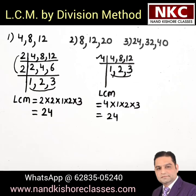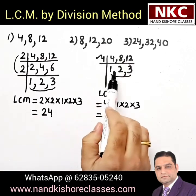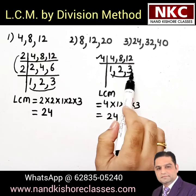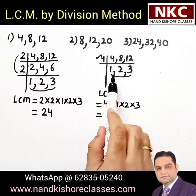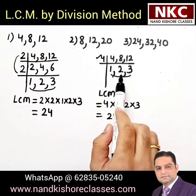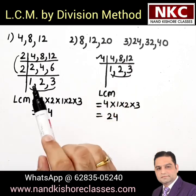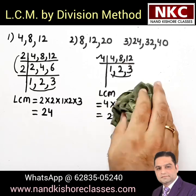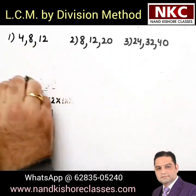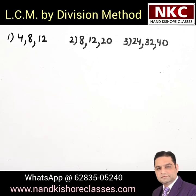I hope you are clear with the method, but this is not the only way. After dividing by 4 you were getting 1, 2 and 3, where all numbers had no common divisor. But sometimes you will get 2 numbers which can be divided by another number and you can still continue. We will see that in the next examples.